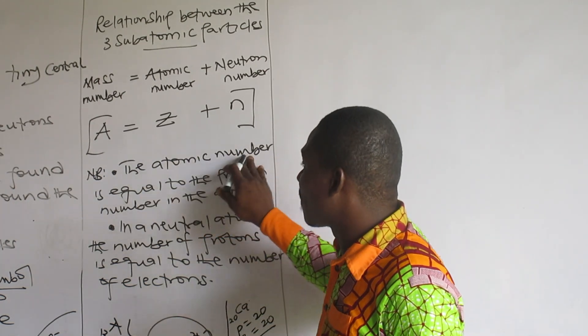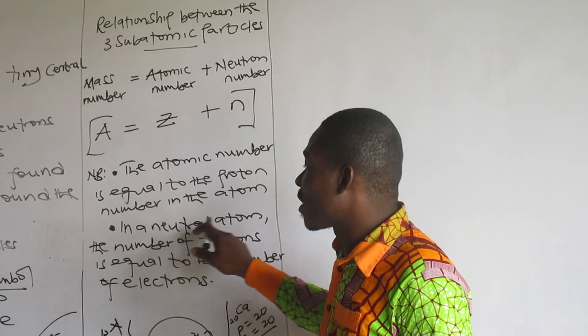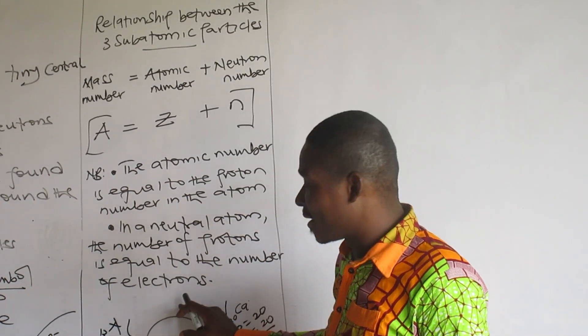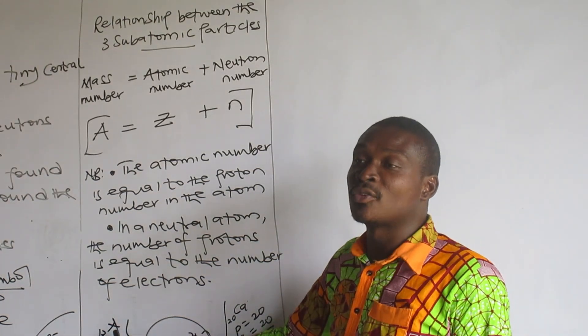The atomic number is equal to the proton number. In a neutral atom, the number of protons is equal to the number of electrons. As I guess in here, we demonstrate the race. Aluminium is a neutral atom.